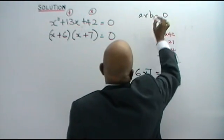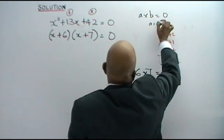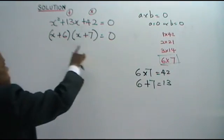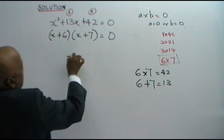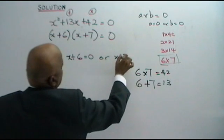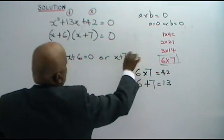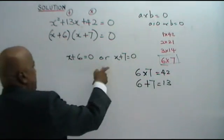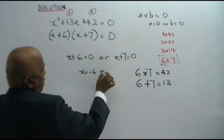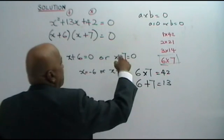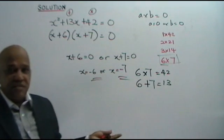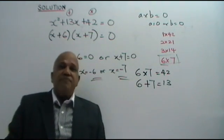When two numbers a times b equals 0, then a equals 0 or b equals 0. Therefore, x plus 6 equals 0, or x plus 7 equals 0. Bring the 6 to the other side: x equals negative 6. Or bring the 7 to the other side: x equals negative 7. These are your answers — the values of x.